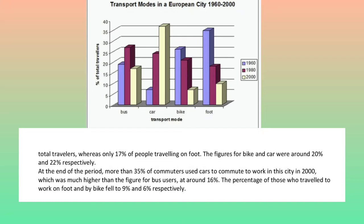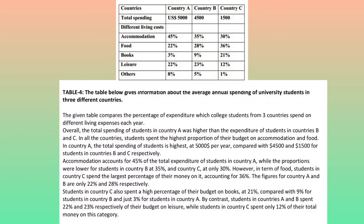At the end of the period, more than 35% of commuters used cars to commute to work in the city in 2000, which was much higher than the figure for bus users at around 16%. The percentage of those who traveled to work on foot and by bike fell to 9% and 6% respectively.